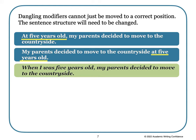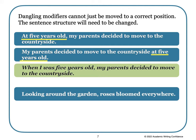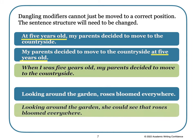Let's look at the sentence we had before: 'Looking around the garden, roses bloomed everywhere.' How can we fix this? We need to put in who was looking around the garden. For example: 'Looking around the garden, she could see that roses bloomed everywhere.' As you can see, if there is a dangling modifier, the sentence will need to be changed.